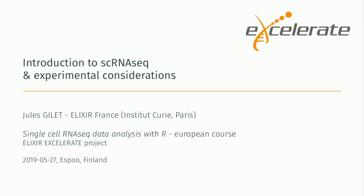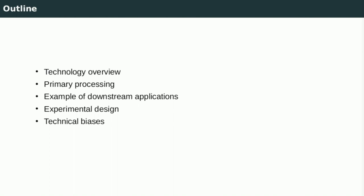Good morning everybody. Before we go into the analysis of the data, we will briefly review how the transcriptome of a cell can be captured, and think about how experimental protocols can alter the data and produce batch effects. I will start with a short overview of the different technologies available to capture a single cell transcriptome, describe the first steps following generation of a count matrix, give some examples of downstream applications like trajectory inference, and in the last part discuss how processing of the sample can alter the data.